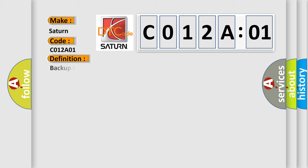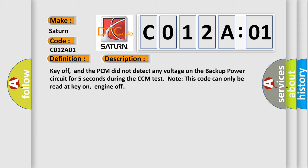The basic definition is Backup power supply malfunction. And now this is a short description of this DTC code. Key off, and the PCM did not detect any voltage on the backup power circuit for five seconds during the CCM test. Note, this code can only be read at key on, engine off.